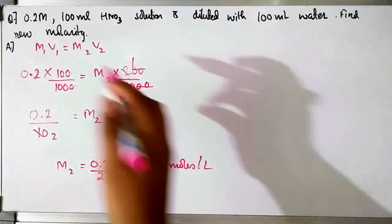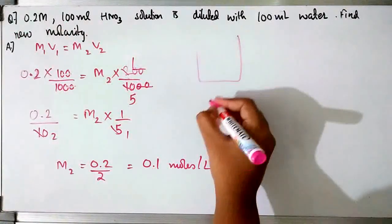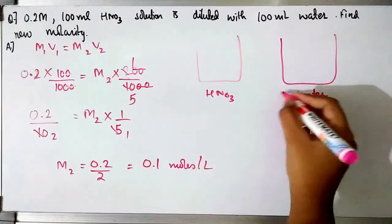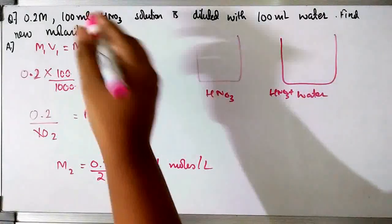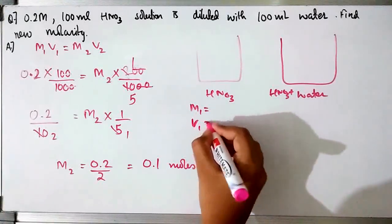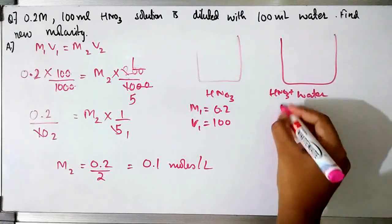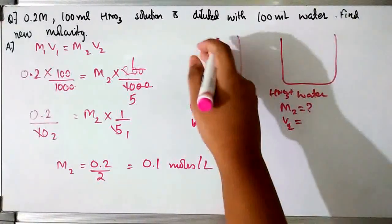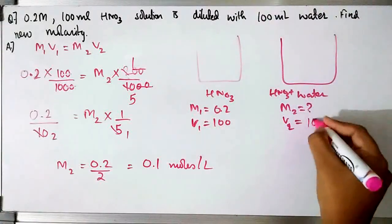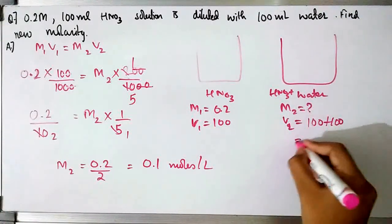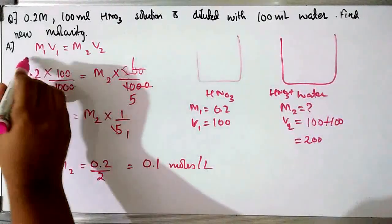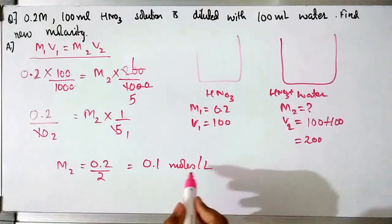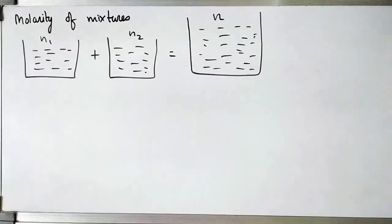To explain again: we had HNO₃ with M₁ = 0.2 and V₁ = 100ml. It was diluted with water — 100ml of HNO₃ plus 100ml of water gives 200ml total. Using M₁V₁ = M₂V₂ and solving, you get the new molarity to be 0.1 moles per litre.